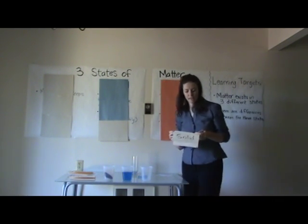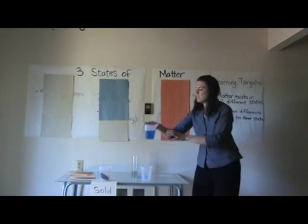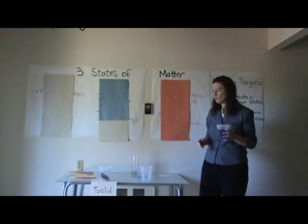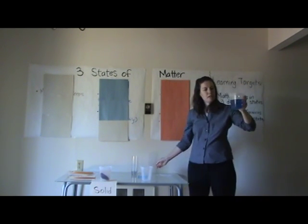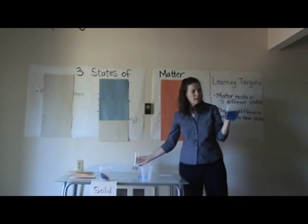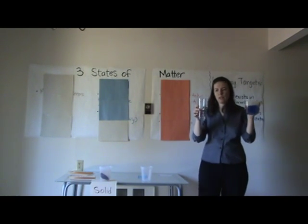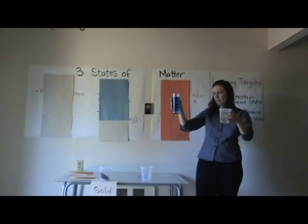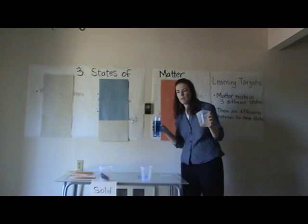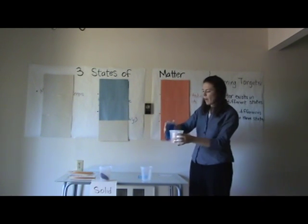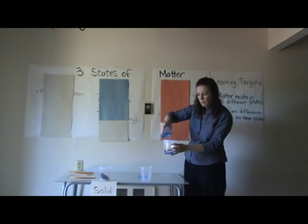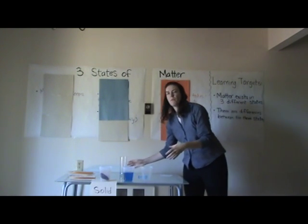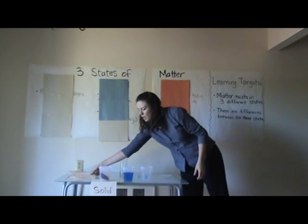Have you heard the expression 'solid as a rock'? That's where that comes from. Now let's look at our juice or Kool-Aid. How would you describe it? It's blue, you could drink it. Think about its shape — how is it different from the rock? It's kind of wobbly. When I pour it into this container, it looks a little different. We can say it takes the shape of the container it's in. And how does it move? You can pour it — a word we use to describe that is it flows. It moves smoothly, and the word for this is liquid.